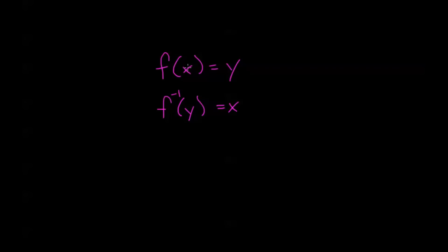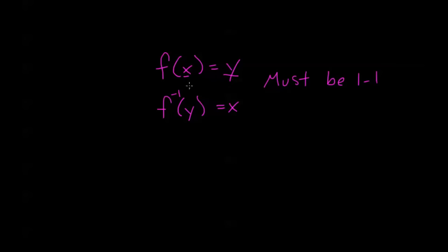If you're plugging in x and getting y, you can find out what you plugged in to get y by plugging that y into the inverse function. Now for this to work, it needs to be 1 to 1. What I mean is, for every x there has to be exactly one y through the function, and for every y there needs to be exactly one x.